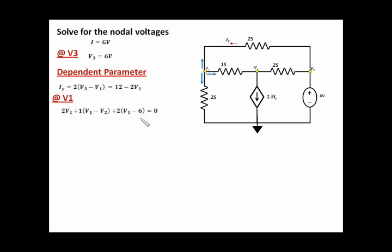So what we do next is organize the terms for V1 and V2. Any constants we move to the other side of the equation. This means we're going to have 5V1 — because 2 plus 1 plus 2 is 5 — then minus 1 times V2, and then 2 times minus 6 gives minus 12, which when taken to the other side becomes plus 12. This is your first nodal equation at node V1.